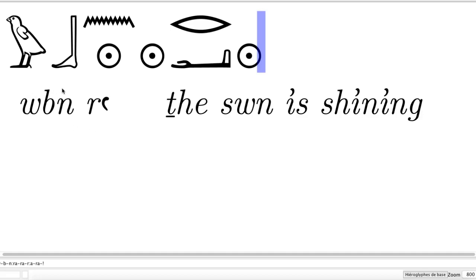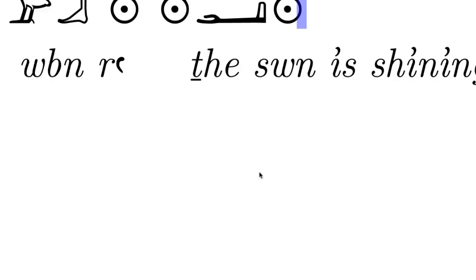So the verb always comes first in Ancient Egyptian — W-B-N. Now we're going to continue with learning hieroglyphic letters, and we're going to move to H — the types of H.